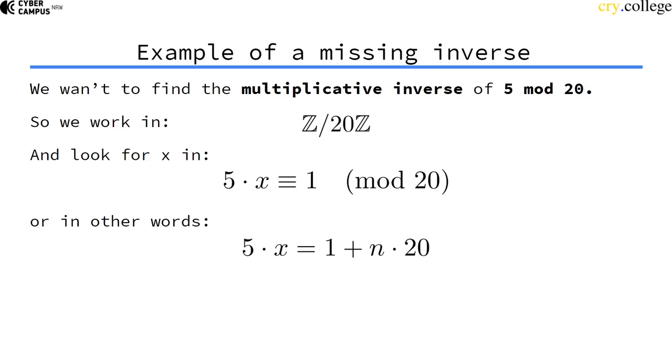We can also rewrite this because the equivalence means that all solutions are of the form 1 plus a multiple of 20. So 5 times its multiplicative inverse modulo 20 equals 1 plus a multiple of 20.